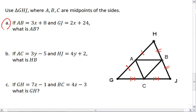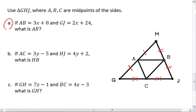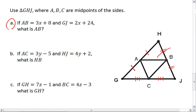Let's start with A. We know that AB is 3X plus 8, and its third side, GJ, is 2X plus 24. There's a number of ways you can do this.